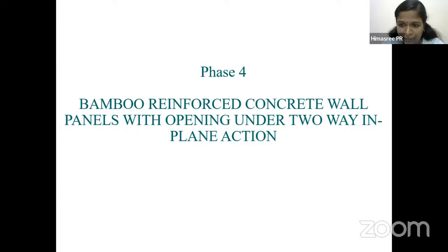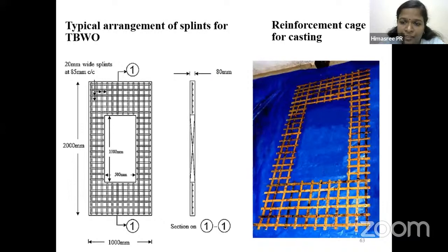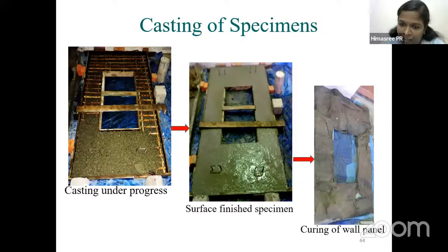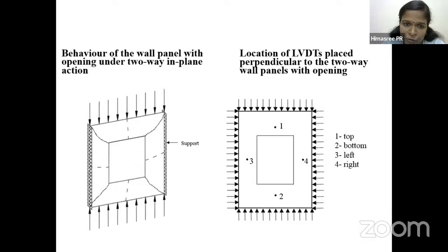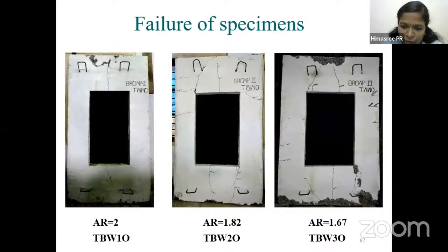Phase 4 — the final phase — involves the same two-way wall panels with an opening of about 25% of the wall panel area. Casting and curing were performed, and after testing, deflections and parameters were recorded using LVDTs. The hypothetical behavior shows cracks developing from the corners of the opening towards the supports, and deflection can occur on both axes.